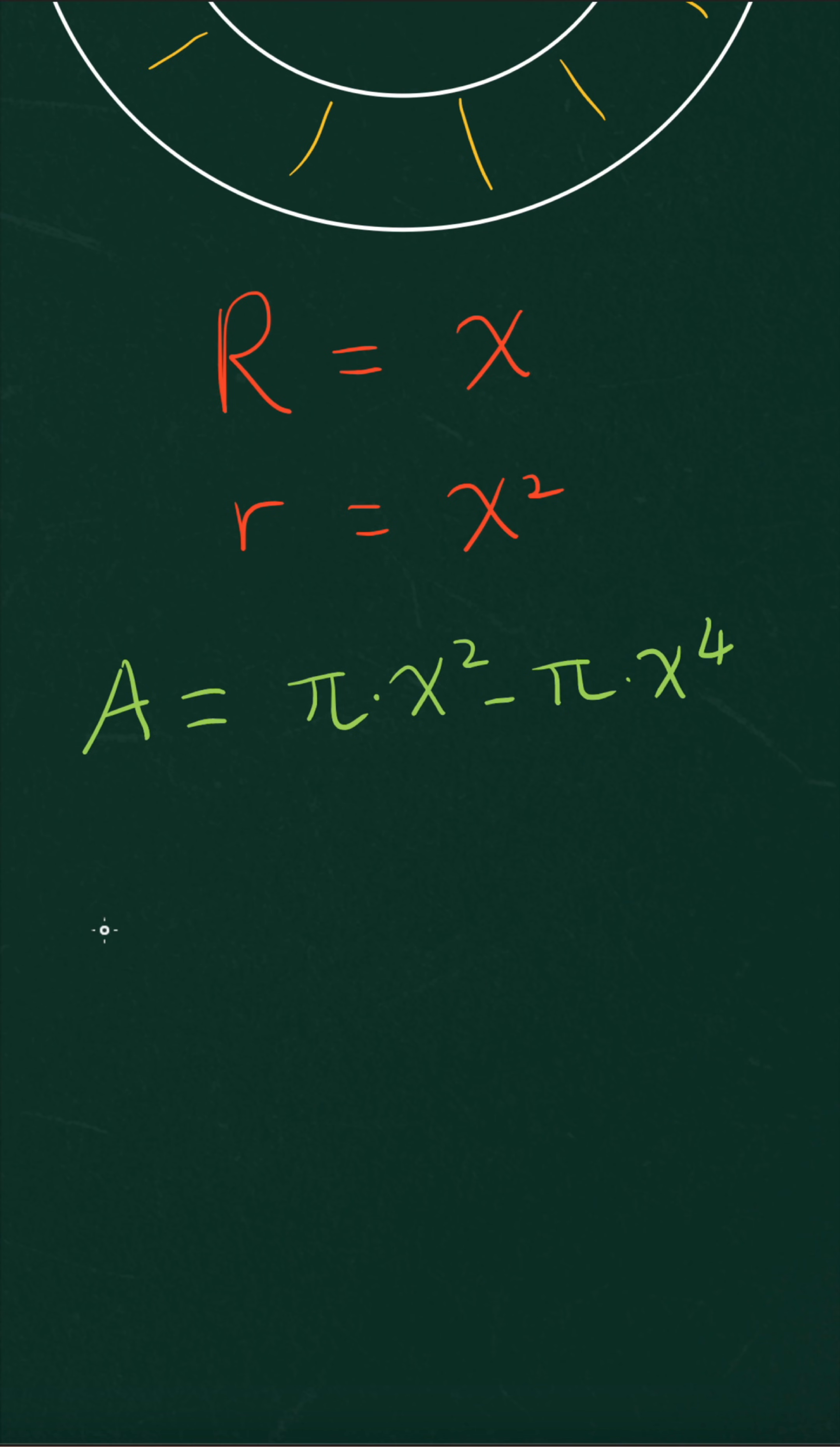Finally, the volume of the shape can be expressed as v is equal to the integral from 0 to 1 of a, which is pi times x squared minus x raised to the power of 4 with respect to the variable of x. And then if you do the calculation, the final result is going to be 2 pi over 15.